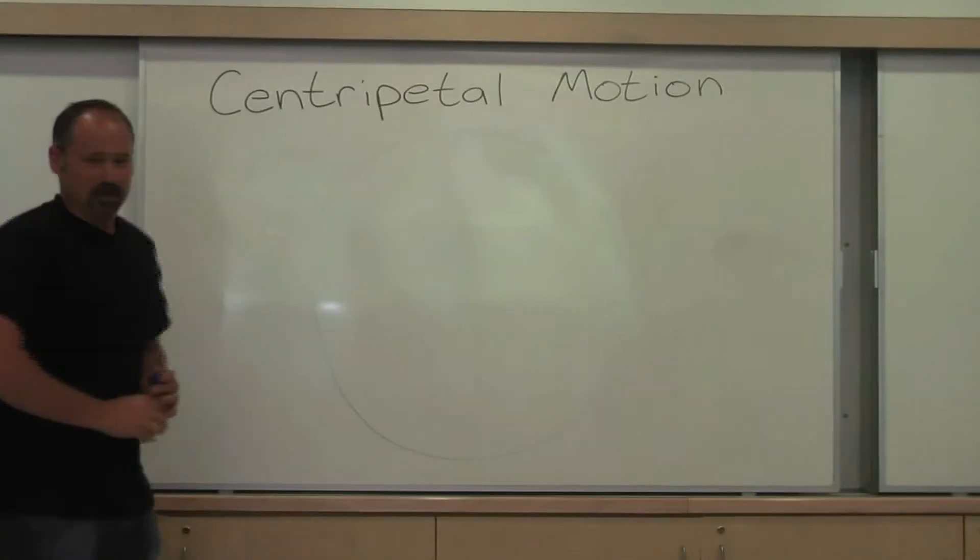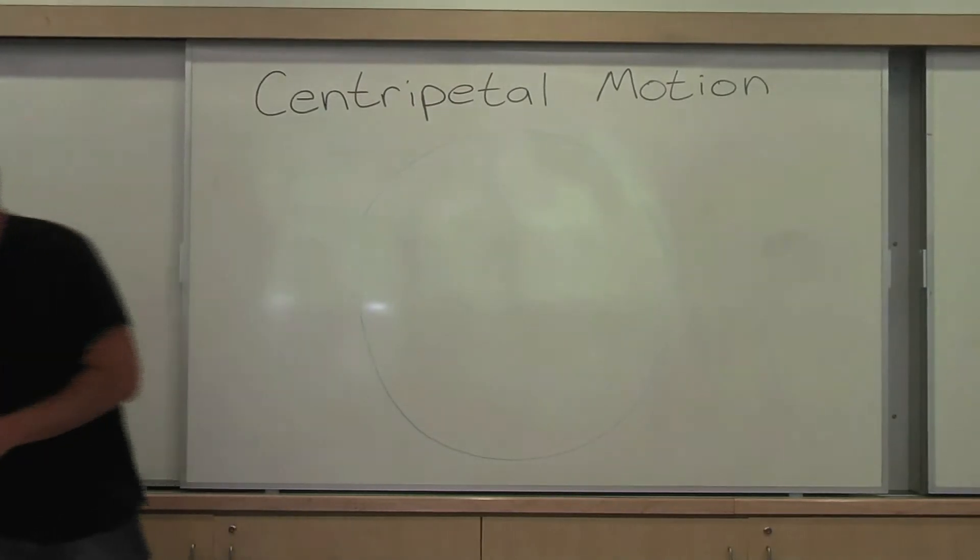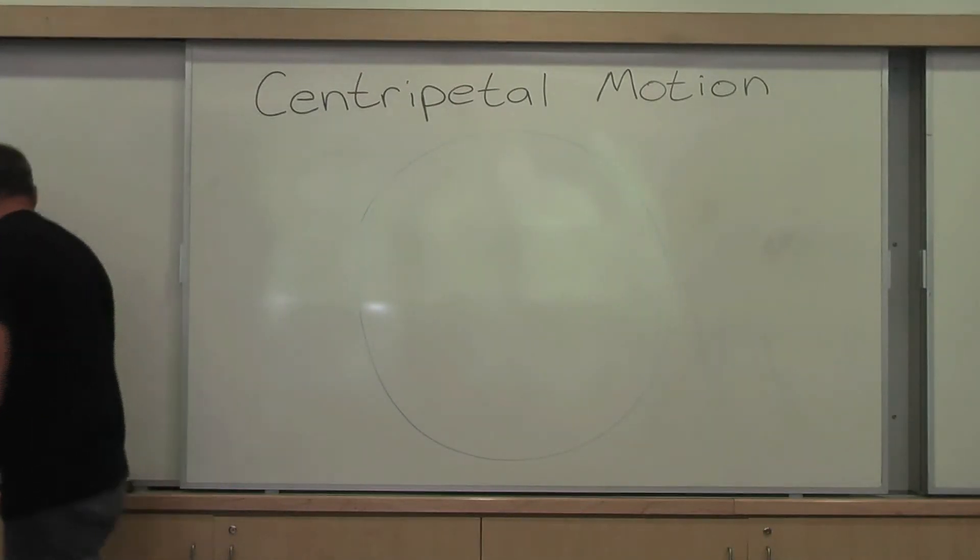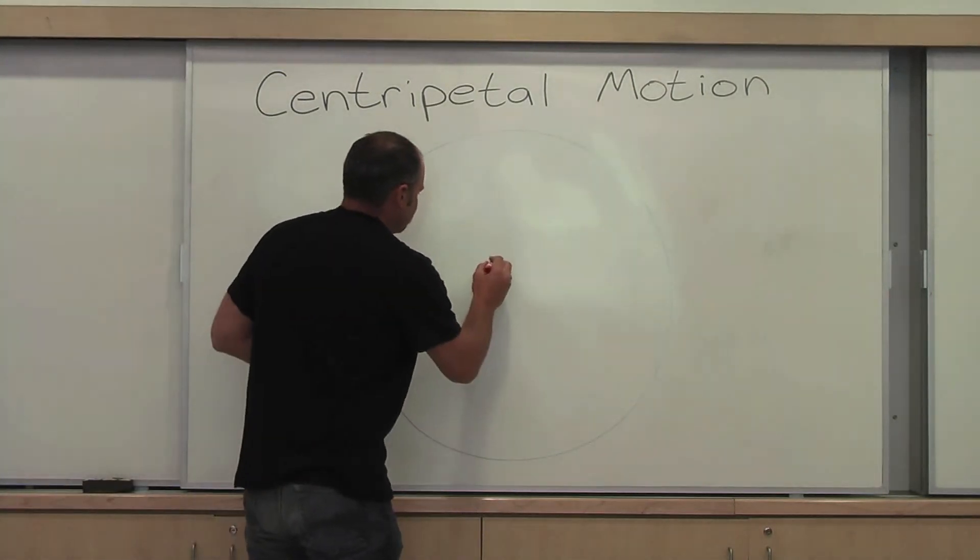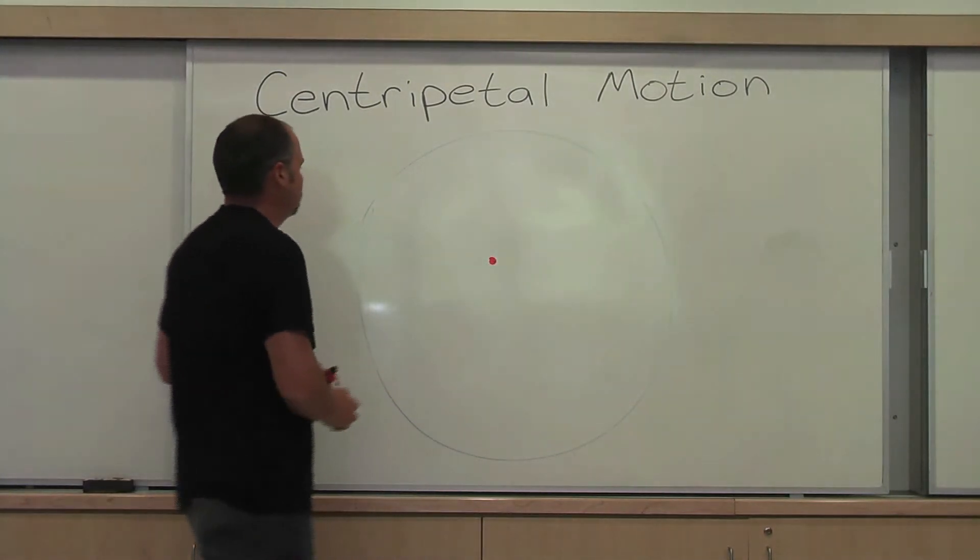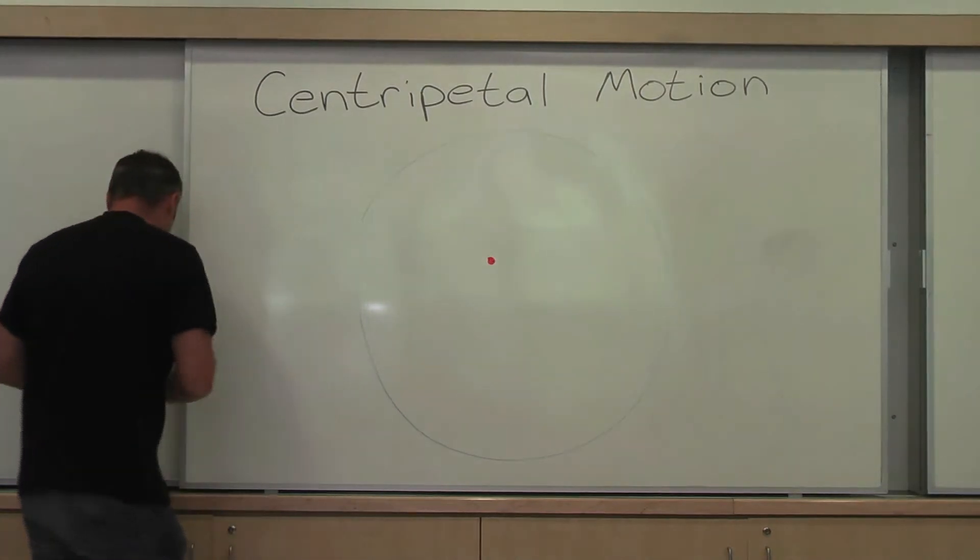So here's the motion of the mass on the eraser. And let's draw the center of the circle. And let's draw in the velocity vector.